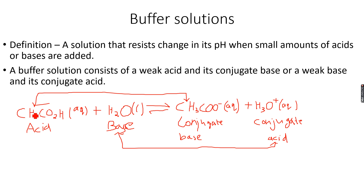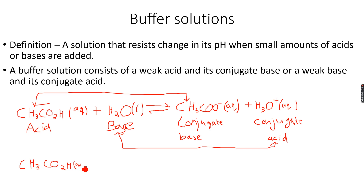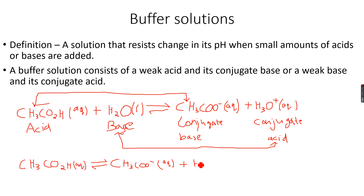Ethanoic acid is a weak acid, so let's take this example. When we have a solution that has ethanoic acid — CH3CO2H (aqueous) — it dissociates to give CH3COO- (aqueous) plus H+ ions (aqueous).